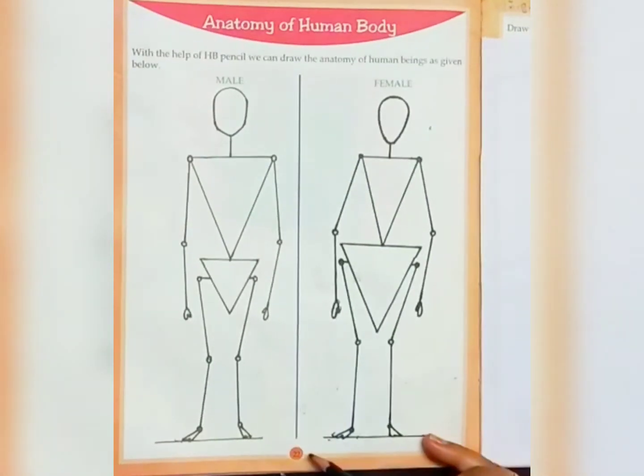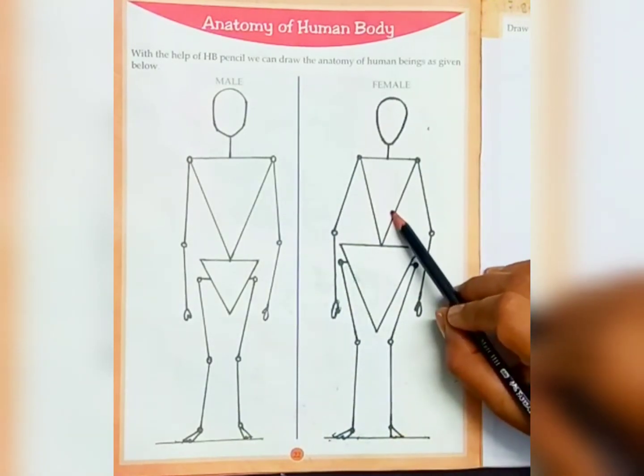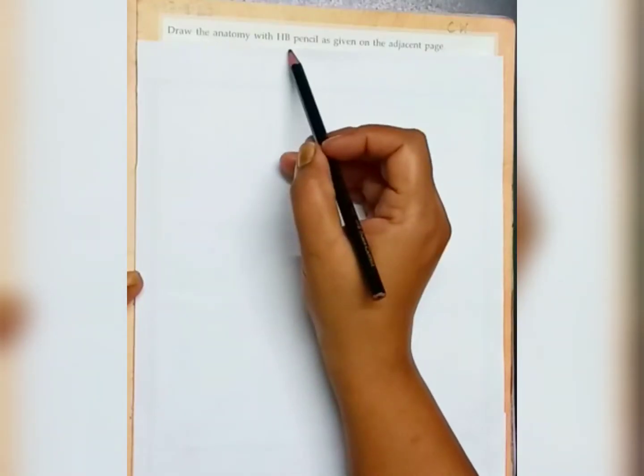This is page number 22. This is male anatomy and this is female anatomy. So we have to copy these two on page number 23. Draw the anatomy with HP pencil as given on the adjacent page. So we have to copy the anatomy.